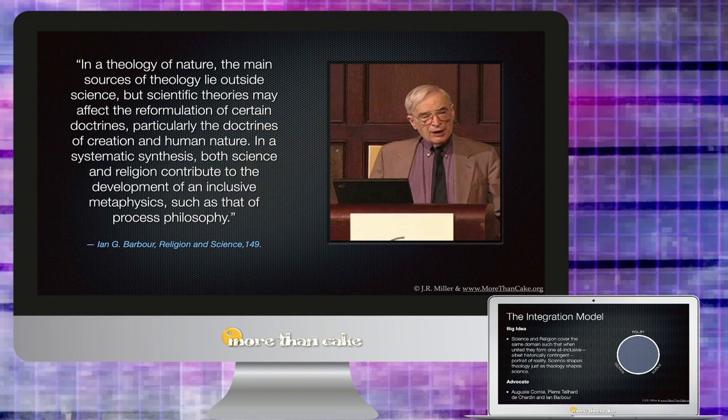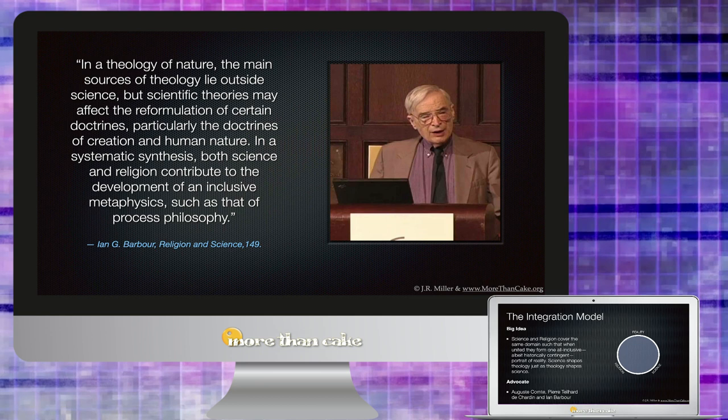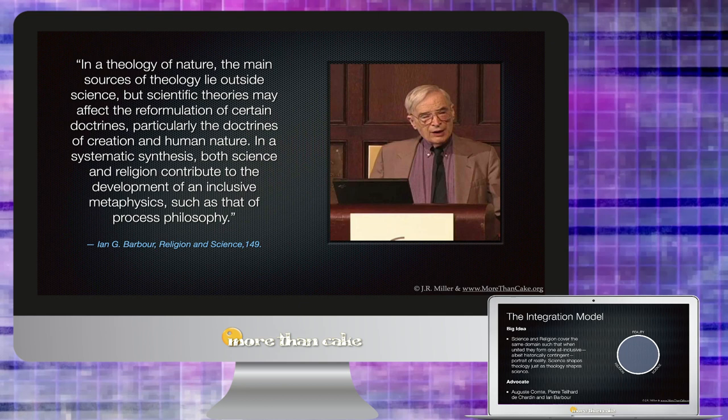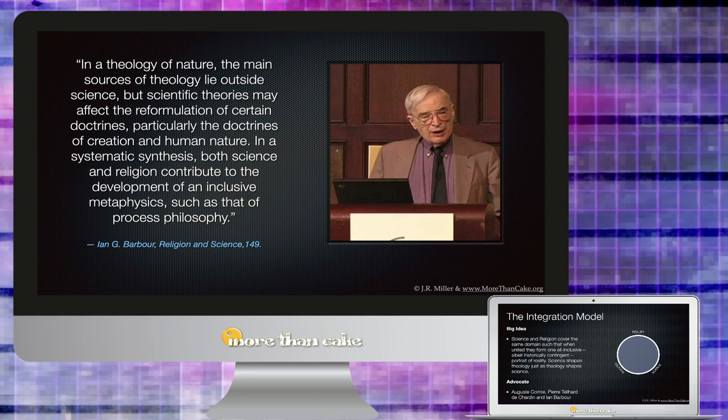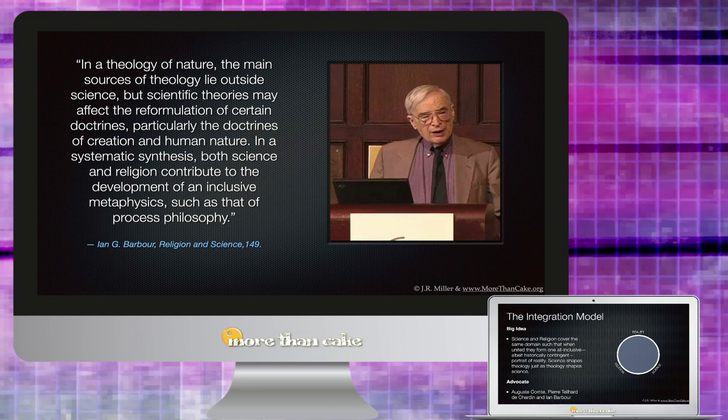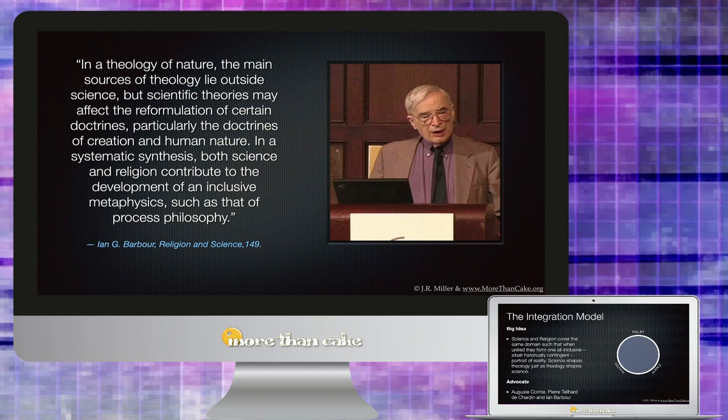Now this is the model that Barbour himself gravitated towards, and he says it this way: 'In a theology of nature, the main sources of theology lie outside of science, but scientific theories may affect the reformulation of certain doctrines, particularly the doctrines of creation and human nature. In a systematic synthesis, both science and religion contribute to the development of an inclusive metaphysics, such as that of process philosophy.' So again here he's saying that the way this works together is that science gives us a more sure knowledge of human origins and this gives us the framework to reshape our theology, but he would also argue there are places where our theology can equally shape our science.